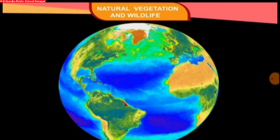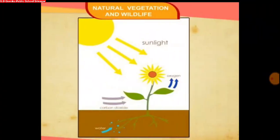Chapter: Natural Vegetation and Wildlife. As we have already discussed, our Earth is unique as it has a green cover over it, which is called natural vegetation. The green cover is possible because sunlight, water, and soil are available on Earth. The plants produce their own food from sunlight, water, and carbon dioxide.